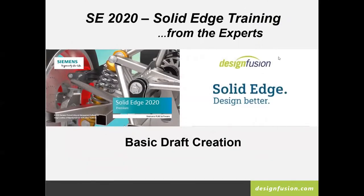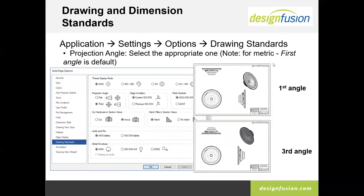Today's session is on basic draft creation. This is our fourth environment we've looked at through these sessions, and this one has an extension of DFT for draft. When you first go into the draft, you want to set up your global settings by going into the Solid Edge options dialog, then going to drawing standards, where you can set up your various drawing standards. If you're using metric in North America, you'll want to change to third angle projection, because the metric default is the European default of first angle projection. Save that in your template.